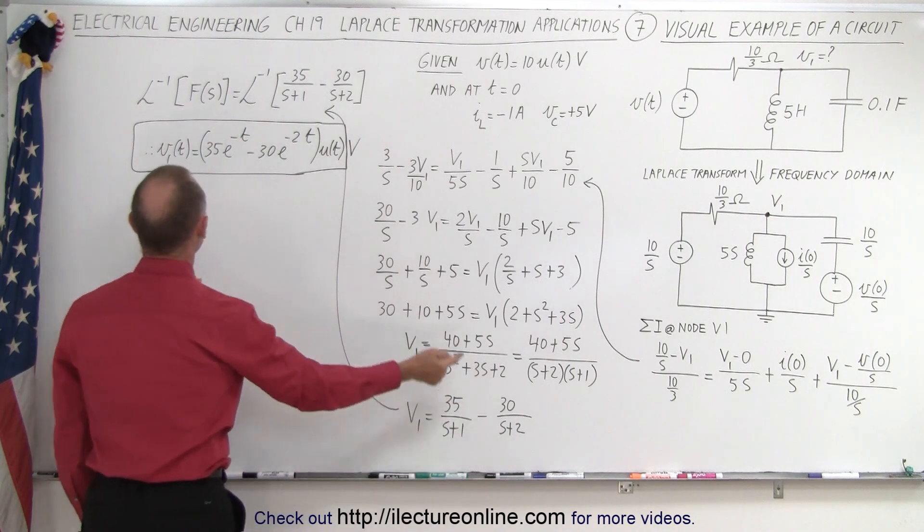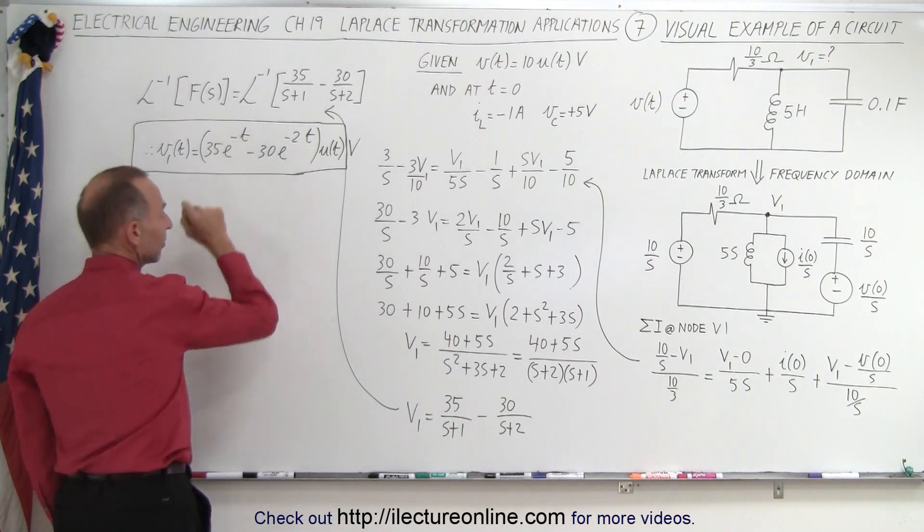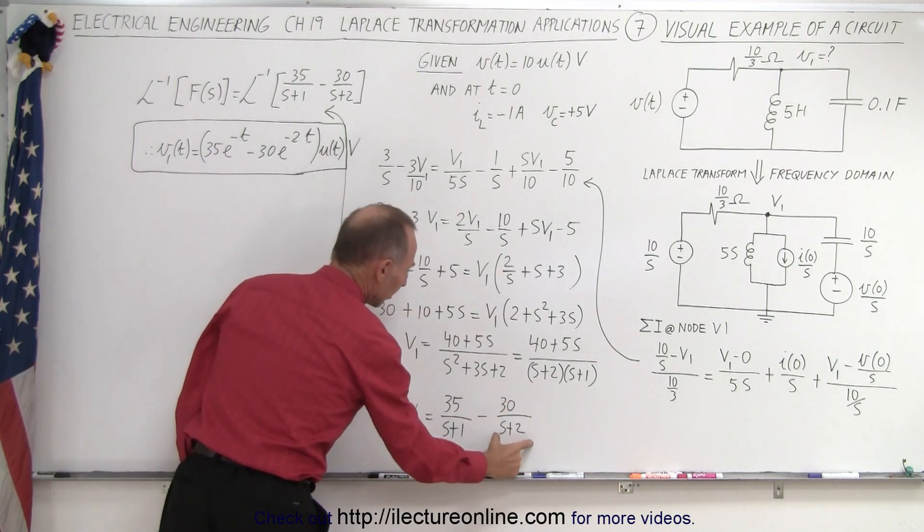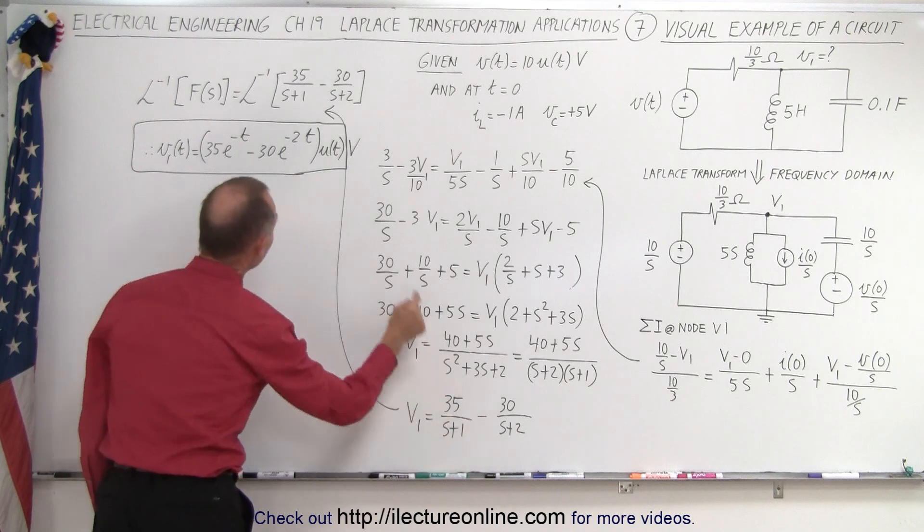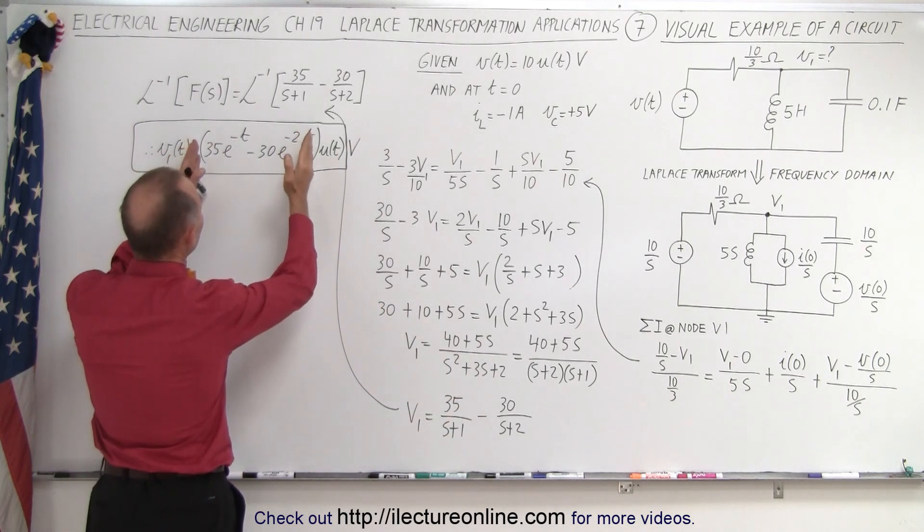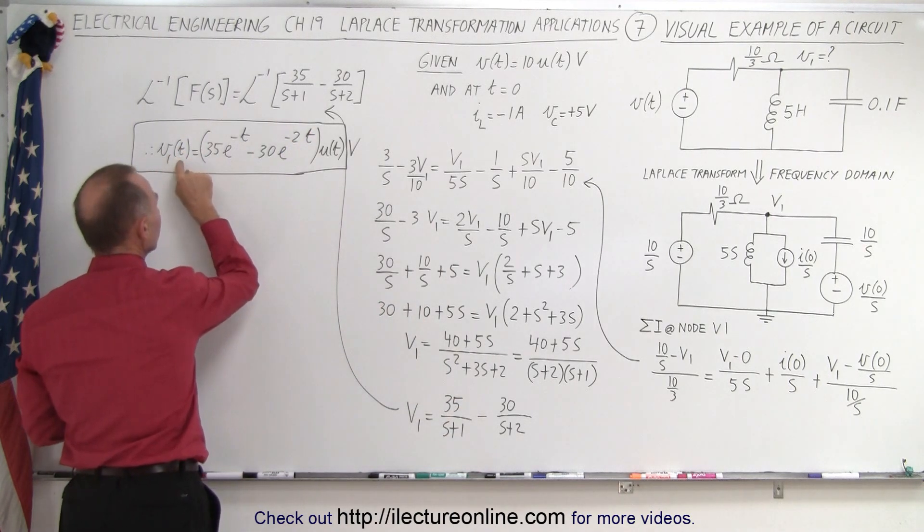35/(S+1) is the same as 35e^(-T), and 30/(S+2) is the same as 30e^(-2T). And of course, you have the negative sign here.